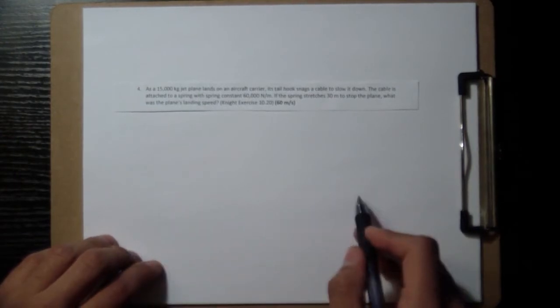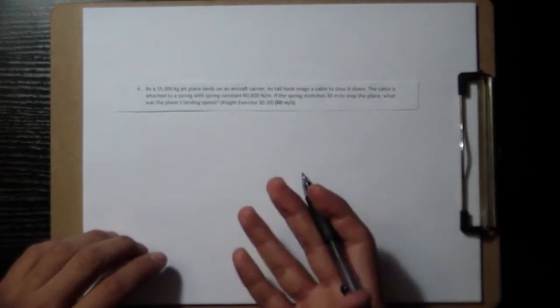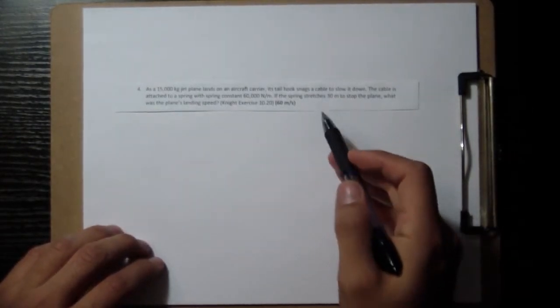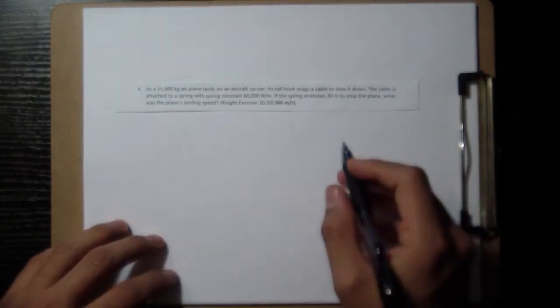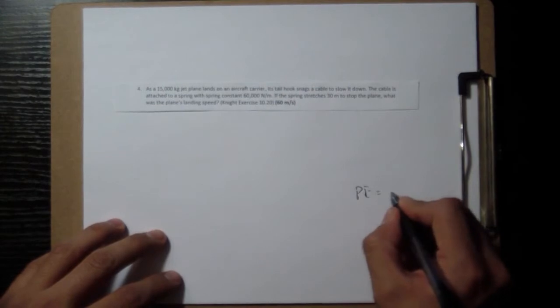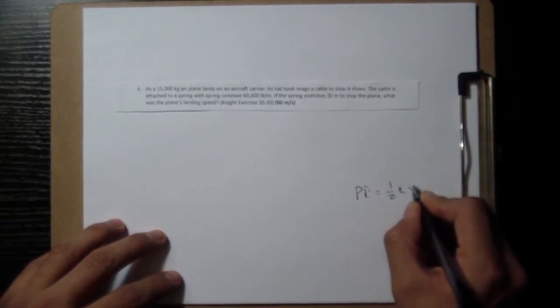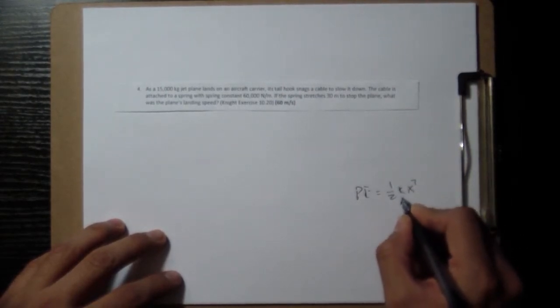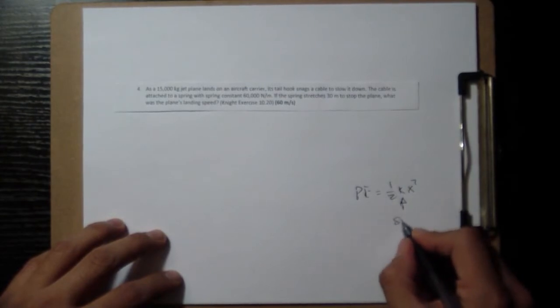So this plane is landing and this cable is slowing it down. This cable acts as a spring. The spring is going to have a potential energy of one-half kx squared, where k is the spring constant.